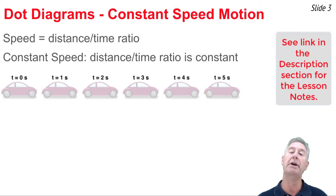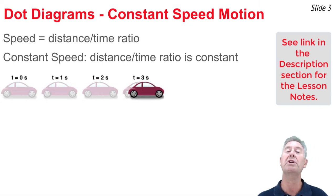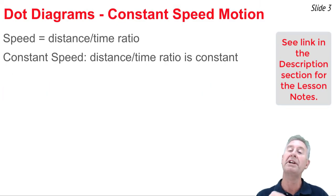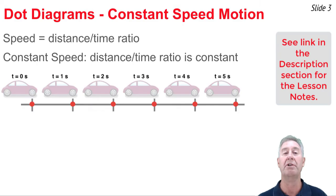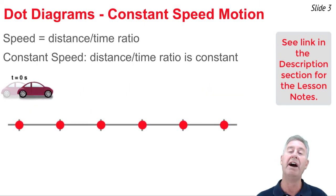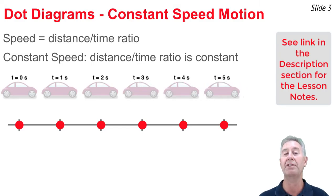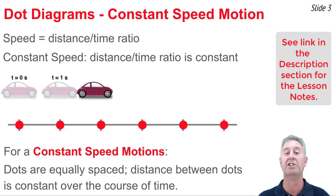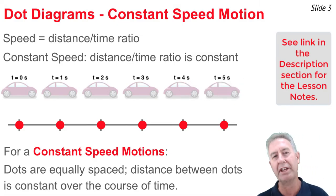We need to pick a reference point on the car to locate its position. We're going to pick the front tire of the car and place a dot at the front tire's location at each consecutive second of time. The dots would look something like you see right there — that's the dot pattern for an object moving to the right with a constant speed. The dot spacing, the distance between consecutive dots, is equal, and that's what we see in that diagram.